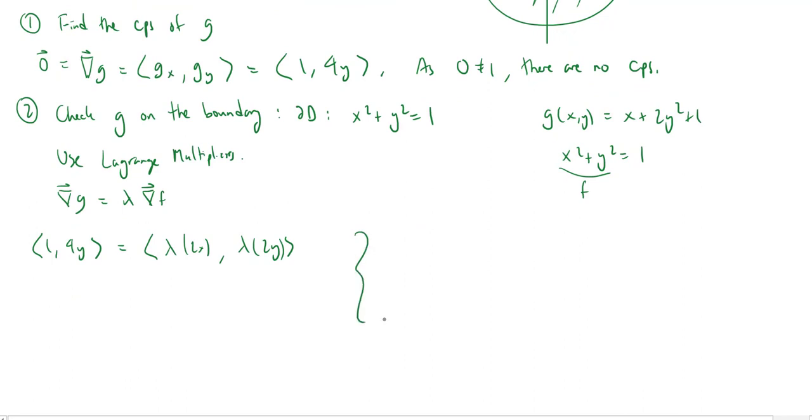We've already computed the gradient of g, so that's 1 comma 4y. And lambda times the gradient of f? The gradient of f is pretty easy. You'll get 2x comma 2y. So this will be lambda times 2x comma lambda times 2y. So we now get a system. We have lambda times 2x is equal to 1. We have lambda times 2y is equal to 4y. And of course, we have the constraint curve. x squared plus y squared is equal to 1.